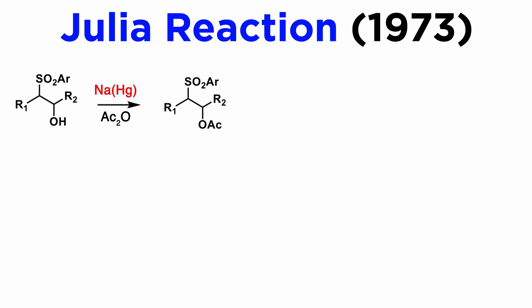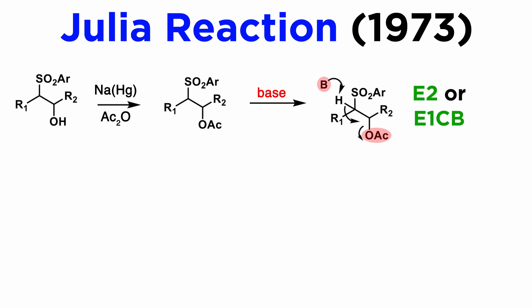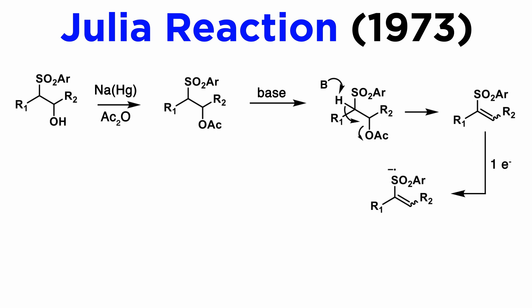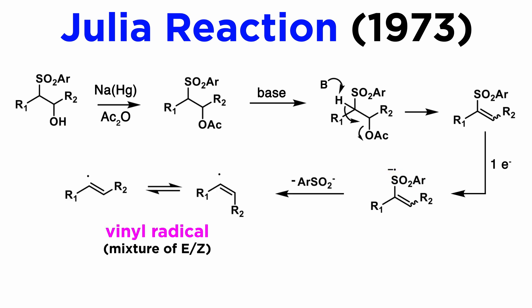The most typical reagent is a sodium amalgam with mercury, and when this is used under basic conditions, the acetate group is eliminated via an E2, or more probably an E1CB mechanism involving prior formation of the carbanion alpha-to-the-sulfone. This leads to the vinyl sulfone, usually as a mixture of E and Z isomers. One electron reduction with sodium leads to a radical anion, which loses the very good leaving group aryl sulfonate, leaving a vinyl radical, which is a rapidly isomerizing mixture of the E and Z radicals.